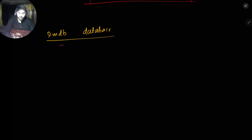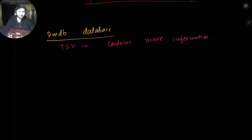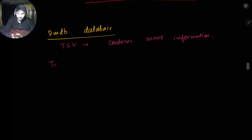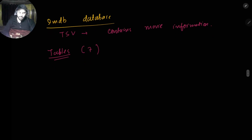The IMDB dataset comprises tab-separated values and there are a lot of files — we'll be working with about six or seven of them. It contains movie information. Let's first see how this dataset looks — the tables that will be in the database. There will be seven tables that we'll be working with — seven relations basically.